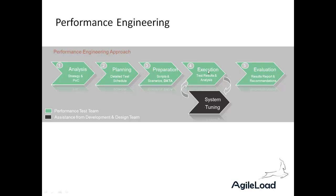Then we move on to the execution phase, which can be anything from 2 hours to 24 hours depending on the type of test. Depending on the tool, you might start to get results as the test is running, and based on that you'll know whether to call the test off or continue to the end. Using something like Agile Load, once it's finished, Agile Load can start to make recommendations useful for system tuning. This becomes a cyclical process — test, tune, test, tune, test — until the performance engineering cycle is over and results are documented properly in a report with any further recommendations.